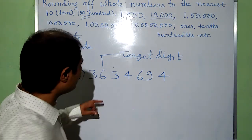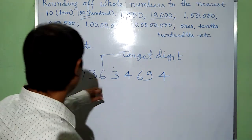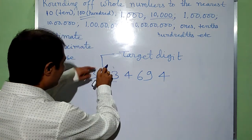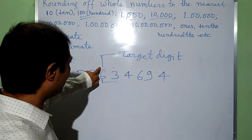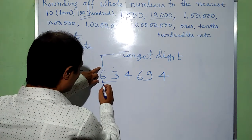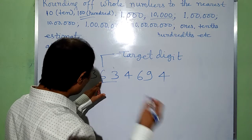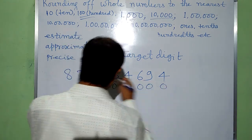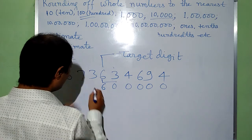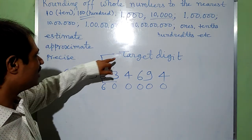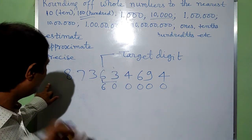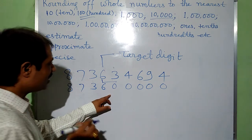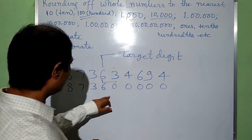Suppose another number is given and we have to round to the nearest multiples of 1 lakh — that is, 100,000. The target digit is at the lakhs place, here it is 6. We look at the digit just to the right of this digit, that is 3. Since 3 is less than 5, we need not change the target digit. All digits to the right are changed to 0, and the digits to the left remain as they are. This is rounding to the nearest multiples of 1 lakh.